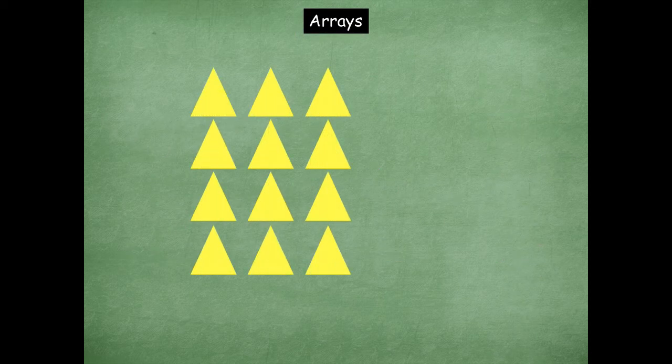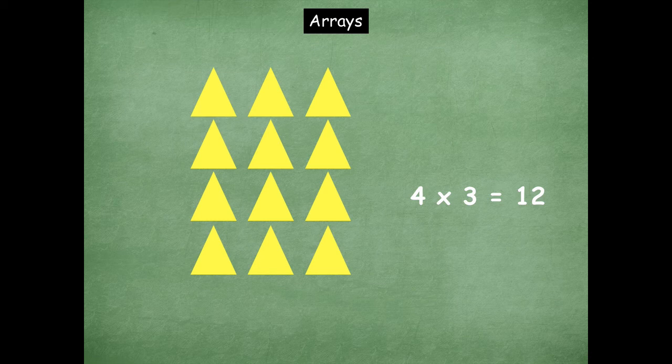So here's our first one. How many rows are there friends? Yeah, four. How many are in each row? Three. So what's the product of an array with four rows and three in each row? Yeah, 12. Four times three is 12.